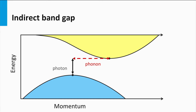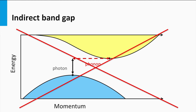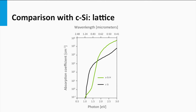In crystalline silicon, both energy and momentum transfer is needed to excite an electron from the valence band to the conduction band — crystalline silicon is an indirect bandgap material. This does not hold for an amorphous lattice; therefore amorphous silicon does not act like an indirect bandgap material, but rather a direct bandgap material. This has a positive effect on the absorption of hydrogenated amorphous silicon, making it more likely that a photon can be absorbed to excite an electron from valence to conduction band.